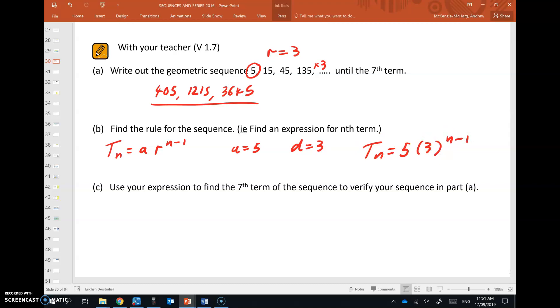Unlike arithmetic sequences, there's no simplification to this. This is how it is. That is the sequence rule written down. Okay, we're going to verify part a by substituting in n equals 7 here. So t_7 is 5 by 3 to the 7 minus 1.